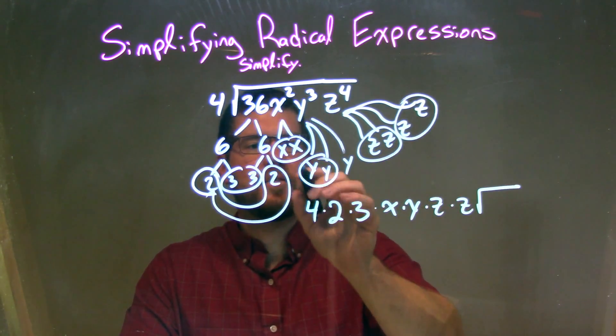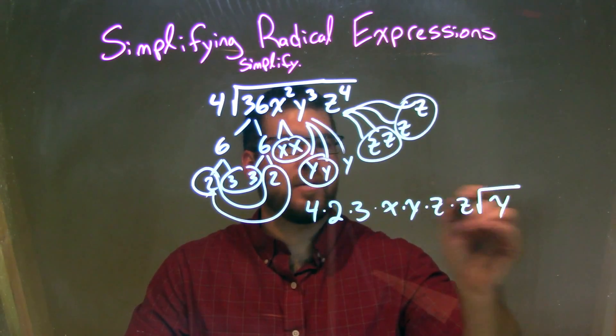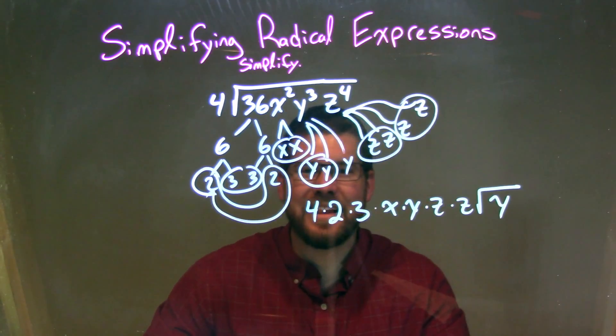Inside the square root, it's just left over, just a single y. Okay, it's the only one that was single there. The lone ranger, as I like to say.